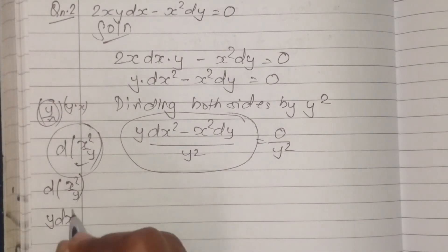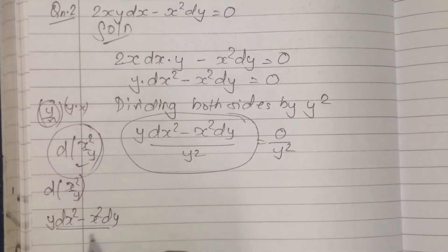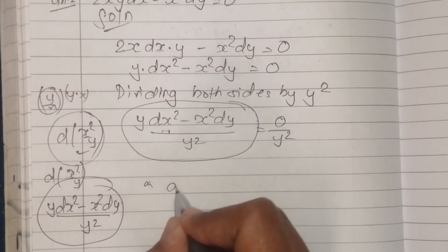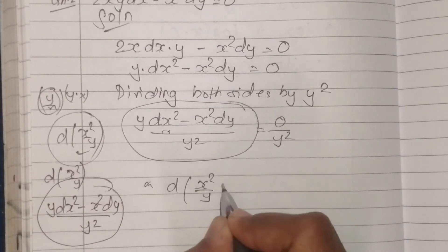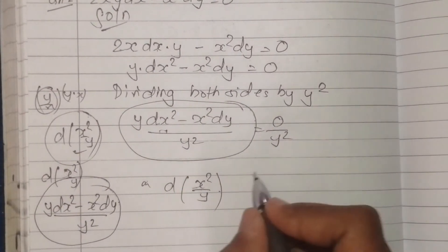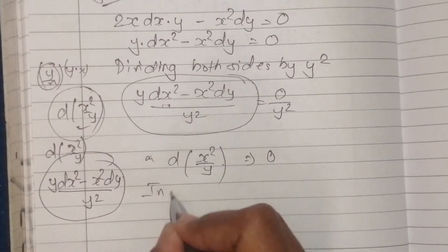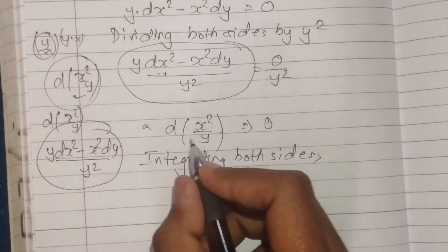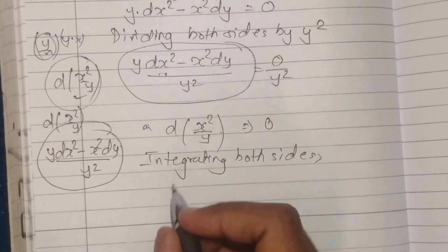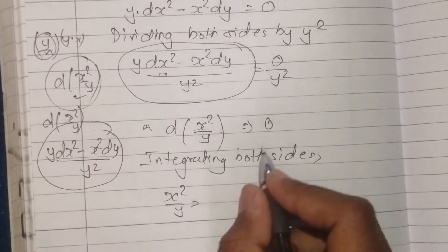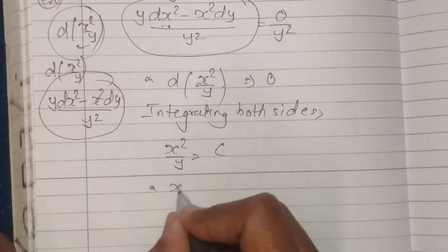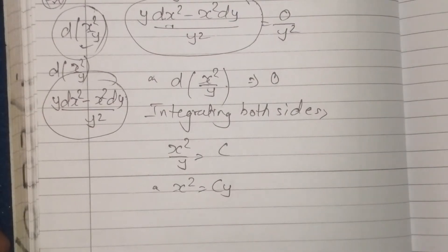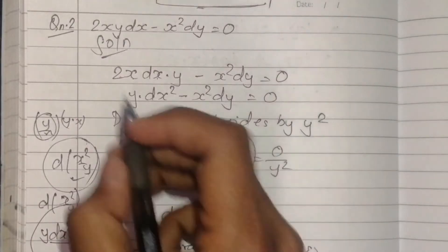We recognize d(x square / y) using the quotient derivative formula. Integrating both sides, the integration and derivative cancel. So x square divided by y is equal to constant C. Therefore x square is equal to Cy. This is the final answer for question two, process one.